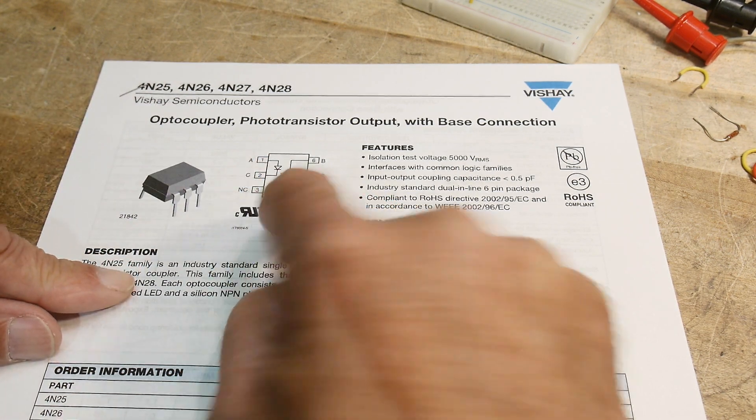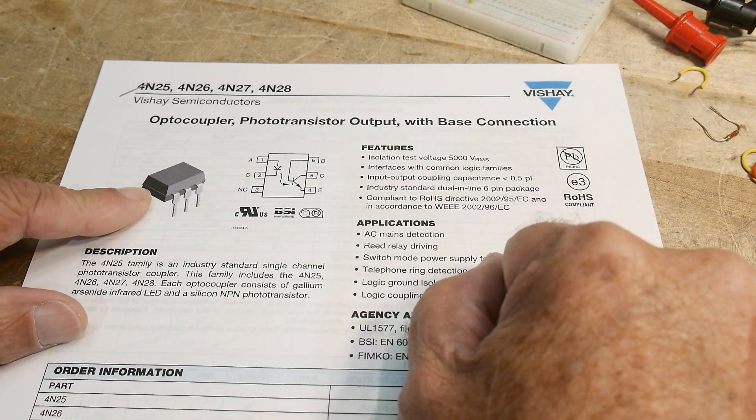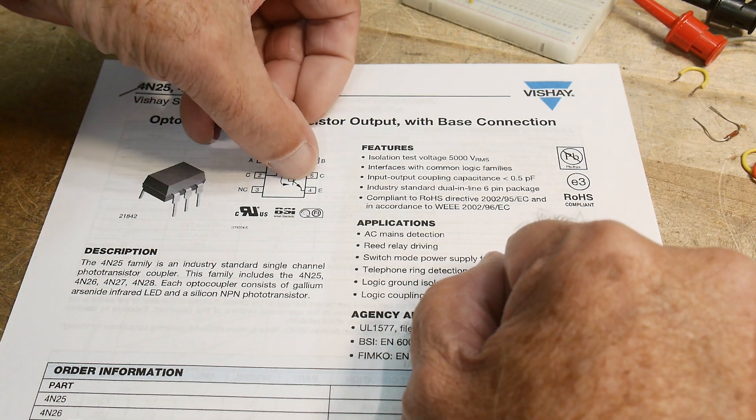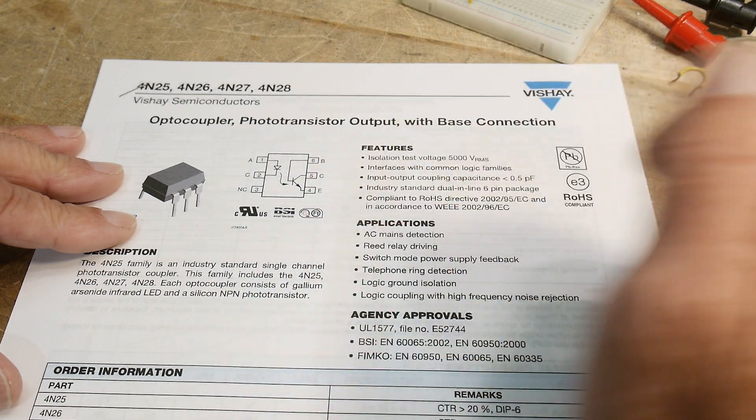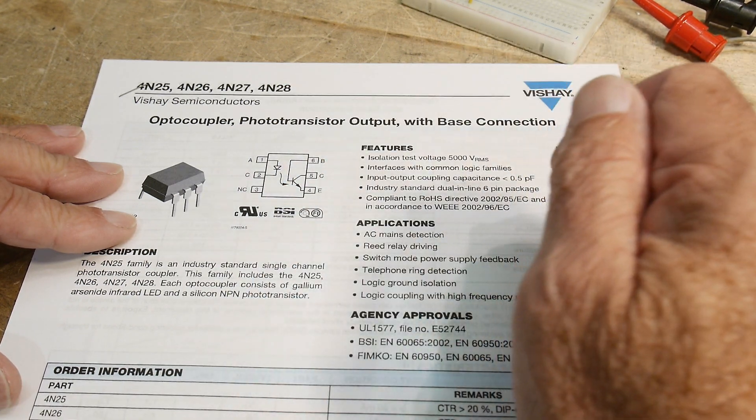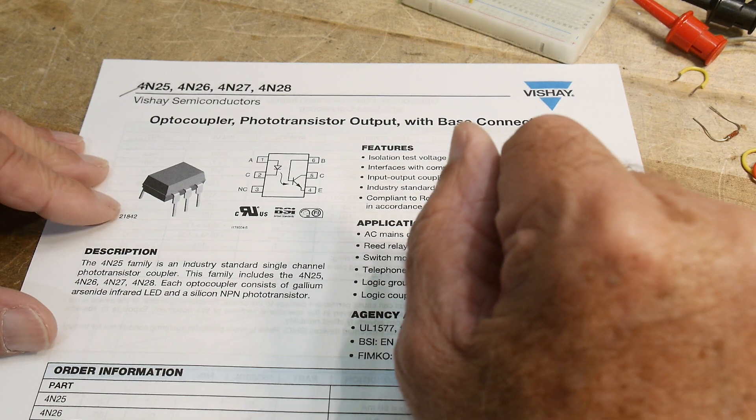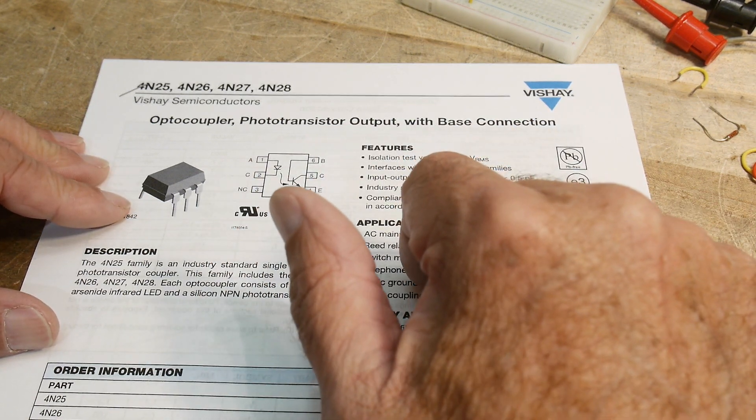It has an LED and a photodiode. The cool thing about this particular optocoupler is it brings out the base of the actual device. So we could probably put that on a curve trace and take a look at it. I think we'll do that later. So let's go ahead and hook one up.